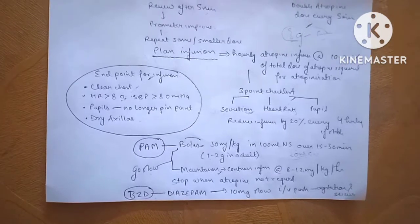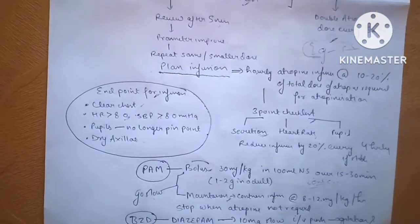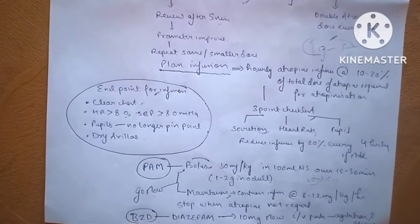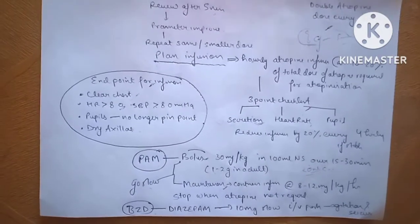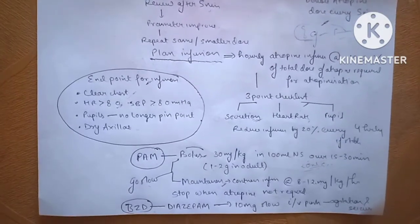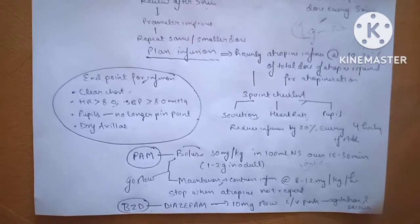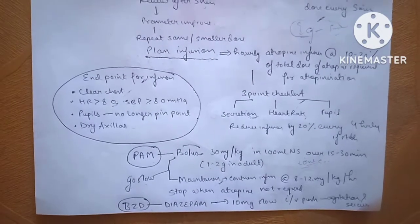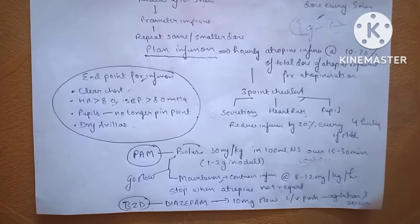Pralidoxime, that is a wonder drug and is the only drug that is given only in the cases of OP poisoning. It reverses the binding of phosphorus to the acetylcholinesterase and it is only useful in atropine poisoning.